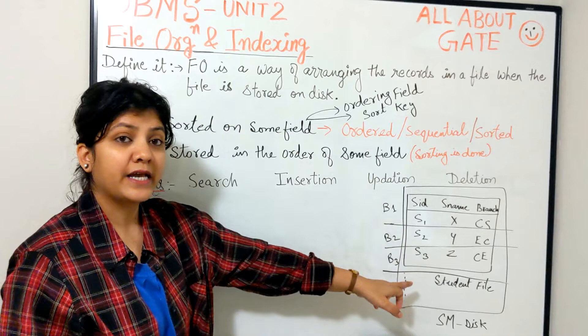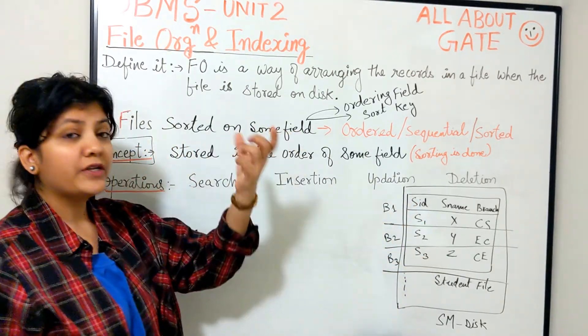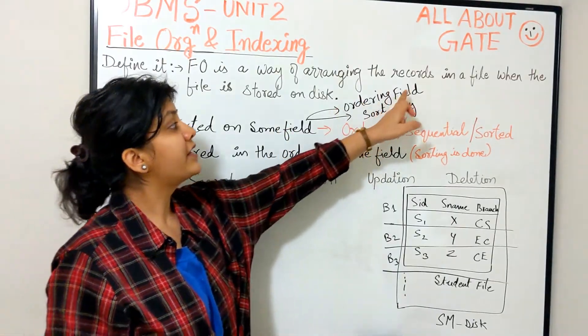Now here in an example we are taking that field as SID. The field which you are using for the sorting of the file or the ordering of the file is known as the ordering field or the sort key.